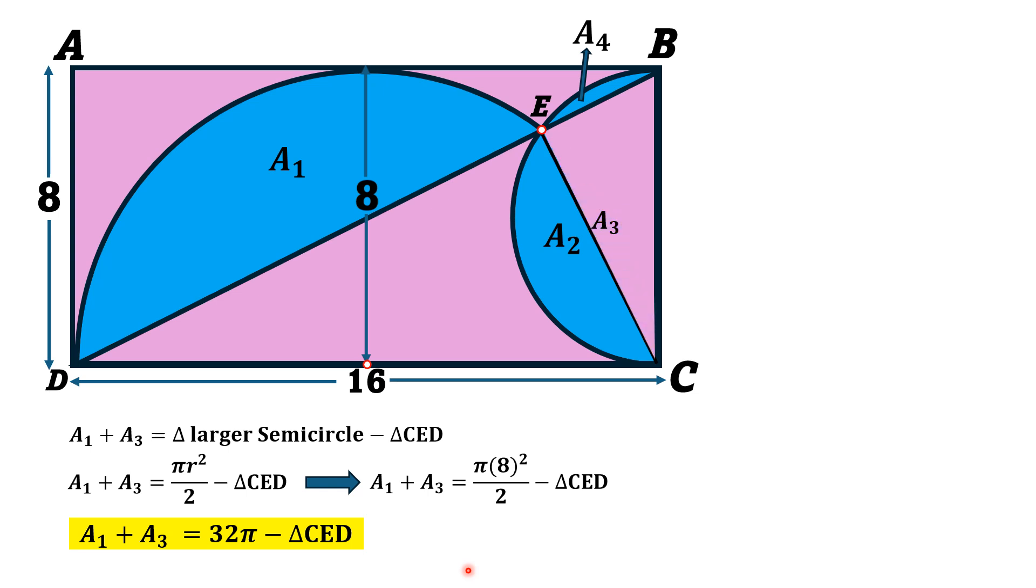Now, we take this smaller semicircle and we consider areas A2 and A4. The sum of these two areas is equal to area of this smaller semicircle having radius equal to 4 units minus area of this triangle CBE or BEC. So A2 plus A4 equals πr² over 2 minus area of triangle BEC.